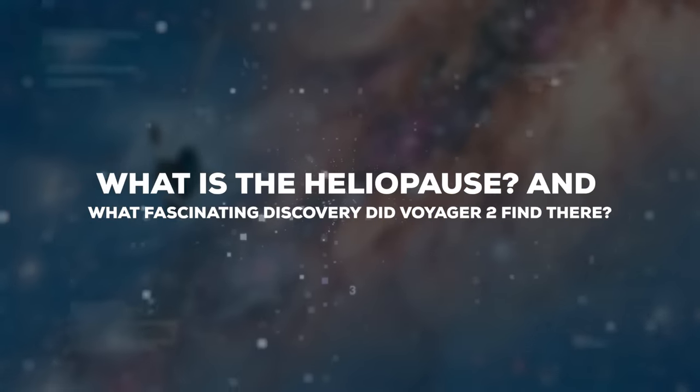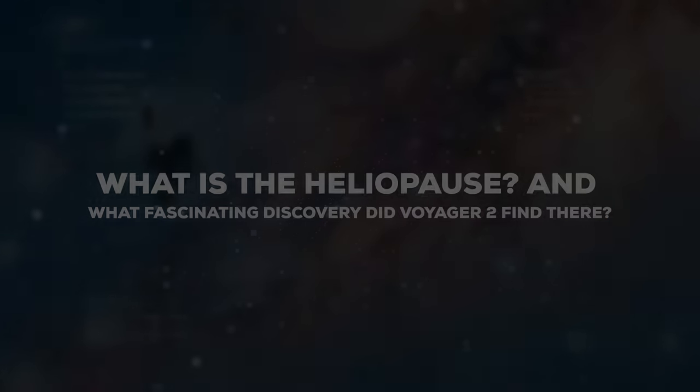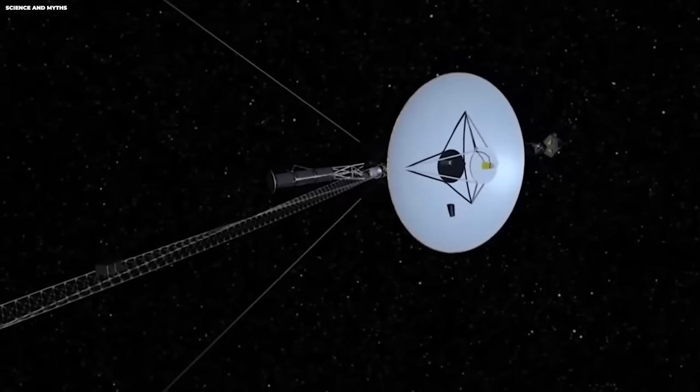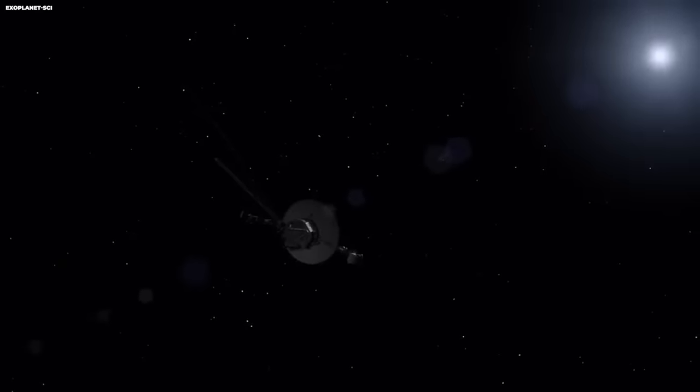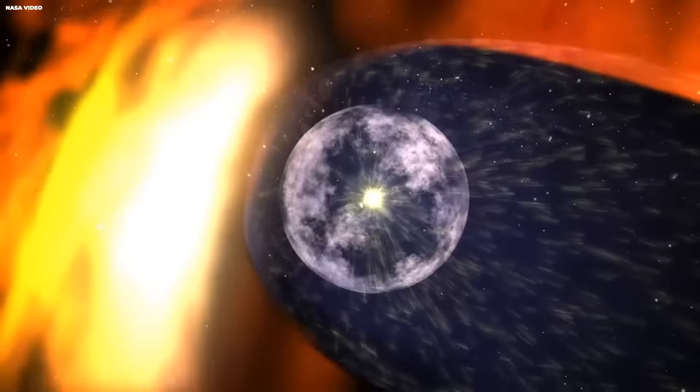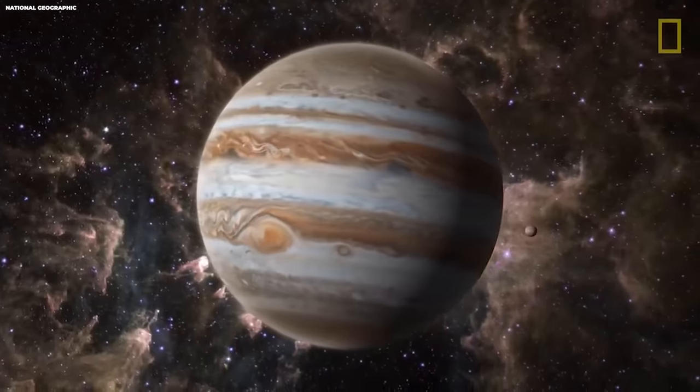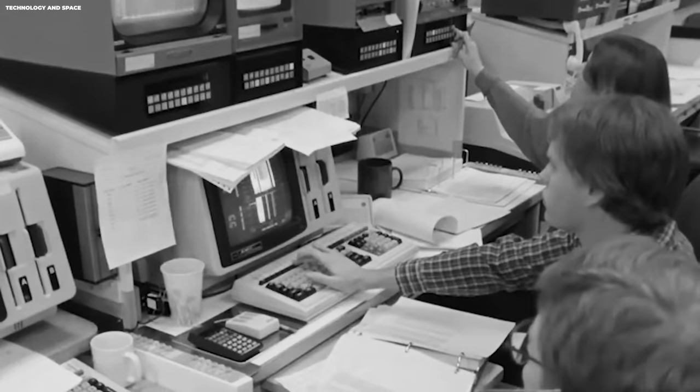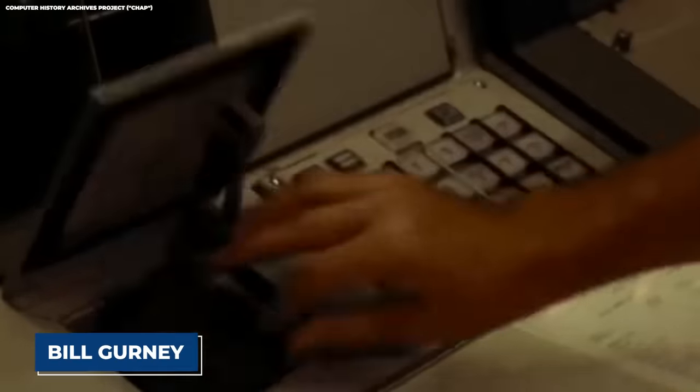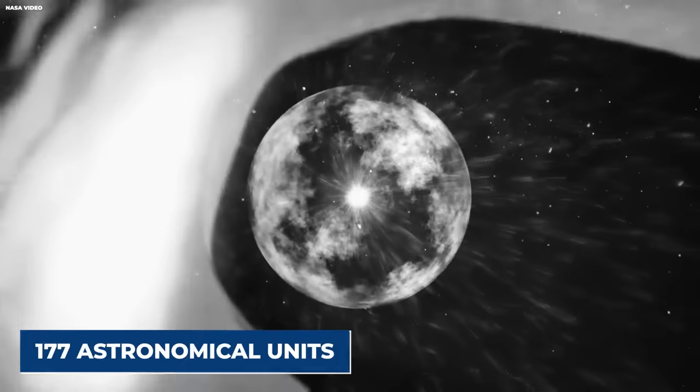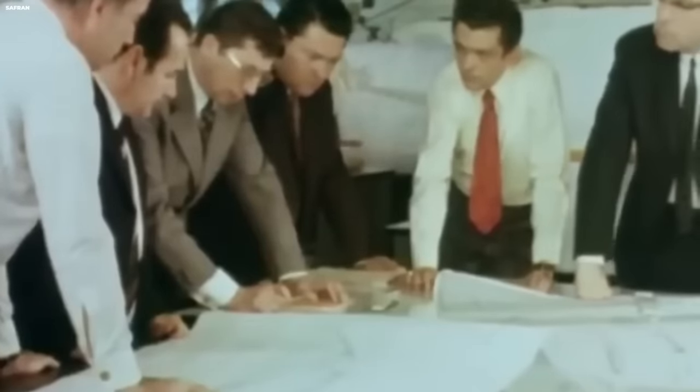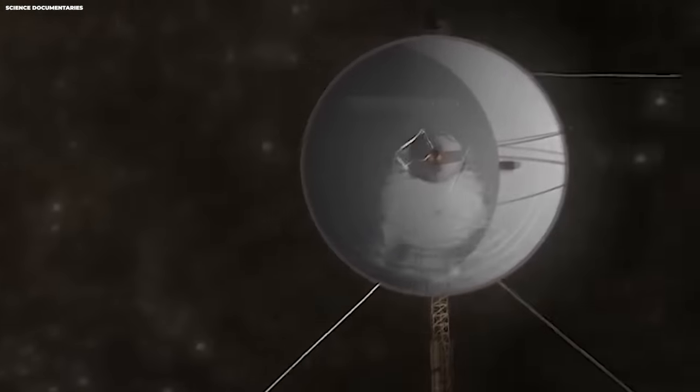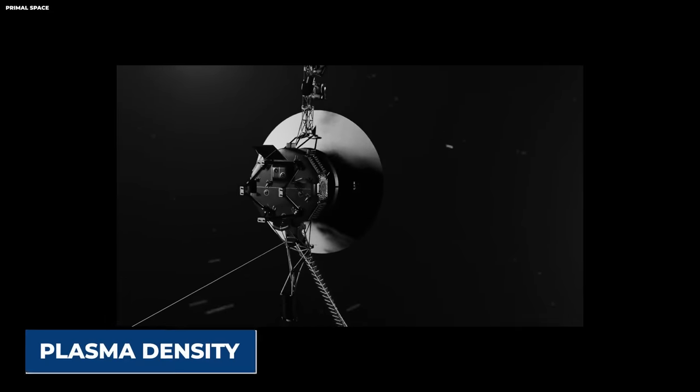So what is the heliopause? And what fascinating discovery did Voyager 2 find there? As the Voyager probes were on their interstellar journey, one of the key milestones they had to navigate was the heliopause. It's the boundary that separates our sun's influence from the vast interstellar space beyond. The exact location of this boundary was a bit of a mystery, with various estimates and theories. Early estimations placed it as close as Jupiter, but subsequent calculations refined our understanding. In 1993, projections by astronomer Bill Gurney placed the heliopause between 116 and 177 astronomical units, AU. To put this into perspective, one AU is roughly 93 million miles, the distance between the Earth and the Sun. Gurney's projections turned out to be remarkably accurate, as Voyager 1 reached the heliopause about 20 years later and detected the expected rise in plasma density.